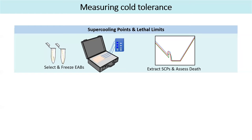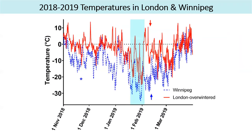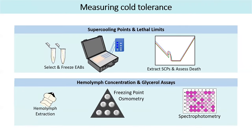We froze individuals to measure their supercooling points as a baseline — the temperature at which the body initiates freezing. Lower supercooling points means more cold tolerant. We also measured mortality across a range of temperatures. I extracted hemolymph and measured the overall osmolality — the concentration of solutes in the hemolymph — using osmometry, which allows us to measure very precisely when hemolymph freezes and back-calculate the total concentration. Finally, knowing that glycerol accumulates in huge quantities in EAB, I measured glycerol with a colorimetric assay with a spectrophotometer.